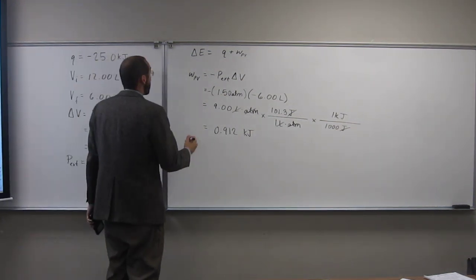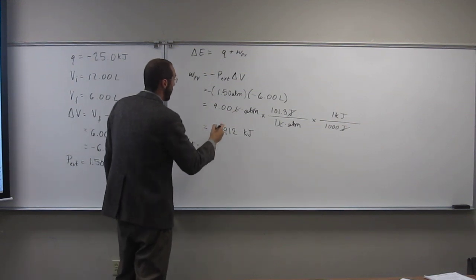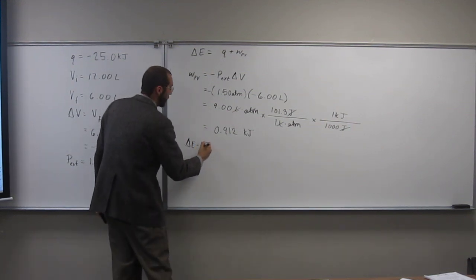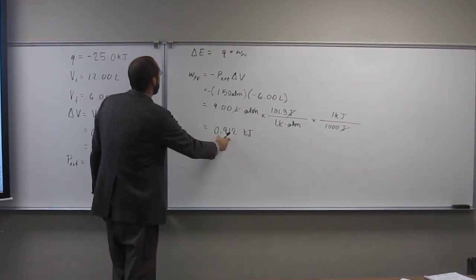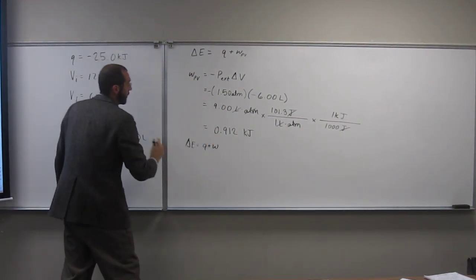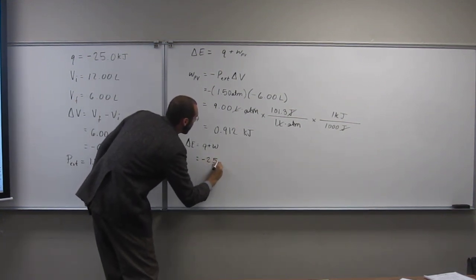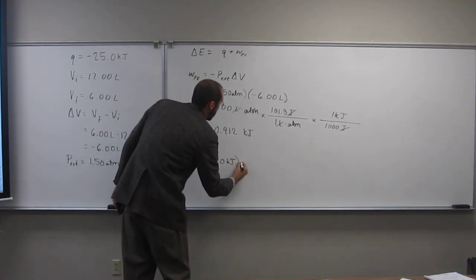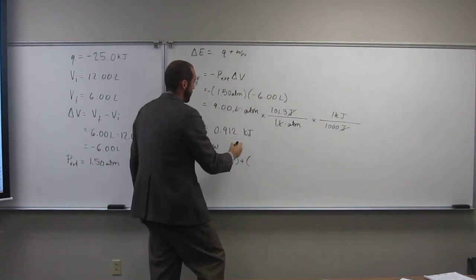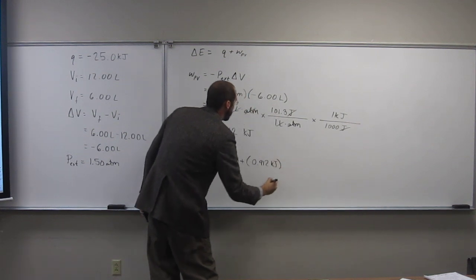So if we were looking at the change in energy here, it's going to be Q plus W, right? So this is W, this is Q here. So negative 25.0 kilojoules plus 0.912 kilojoules.